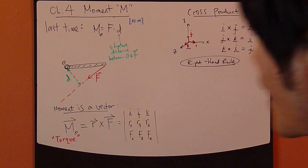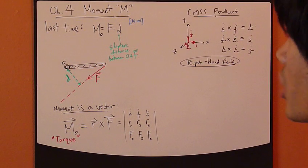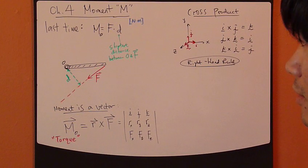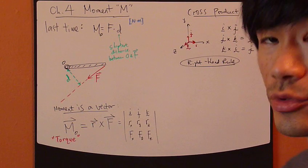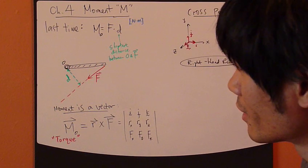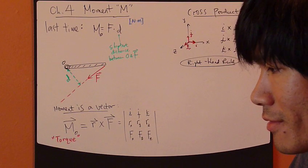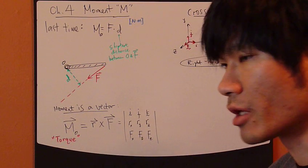All right, let's recap what we did last time. We started talking about chapter 4, moment. What is moment, really? The meaning of moment is the tendency of force to make an object rotate.